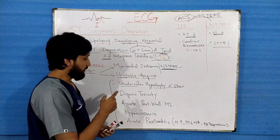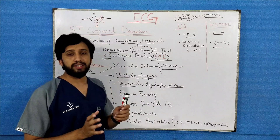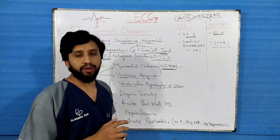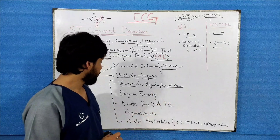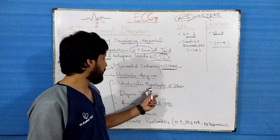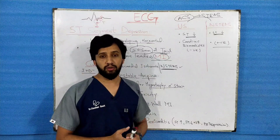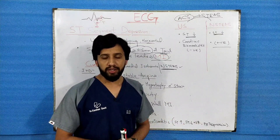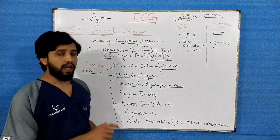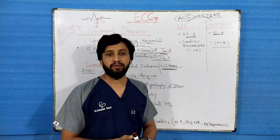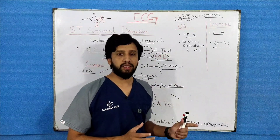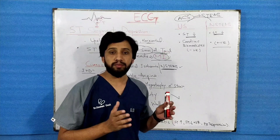The next cause is ventricular hypertrophy with strain. In this condition you will see ST segment depression on the ECG along with T wave inversions. Another cause is digoxin toxicity, commonly seen in patients taking digoxin for chronic heart failure or atrial fibrillation. The ST segment depression in digoxin toxicity has a characteristic shape called the reverse tick sign or thumb impression.